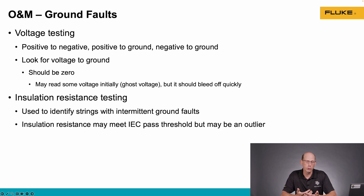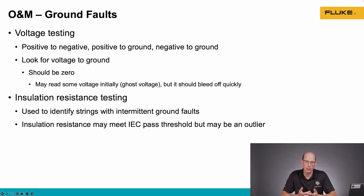We can also use insulation resistance testing to find circuits with ground faults. If we have a circuit with low insulation resistance values where we're leaking current to ground, that would be an indication that there's a ground fault on that circuit.